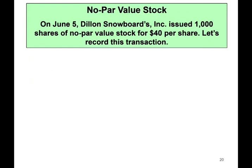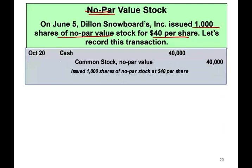Let's assume we issued a no-par-value stock — there is no par. Sometimes companies decide not to have a par. On June 5th, Dylan Snowboard issued 1,000 shares of no-par value for $40. We sold 1,000 shares at $40, giving $40,000 in cash. We debit cash $40,000 and credit common stock $40,000. We have no paid-in capital in excess of par — why? Because we have no par. You cannot have excess of par if there is no par.